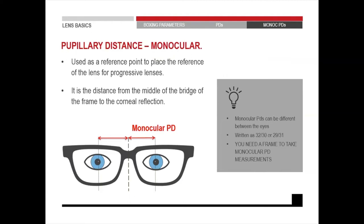Monocular PD is measured from the right side to the nose bridge and the left side to the nose bridge. What is important is that we measure it from the center of the nose bridge of the frame to the center of the pupil. Everyone's noses are not in the center — we are not symmetrical. It's not actually normal to have exactly the same measurement on the right and left side. It's important to specify monocular PDs when ordering surface lenses, whether bifocal, multifocal or surface single vision, because you can have more accurate vision through the corridors.